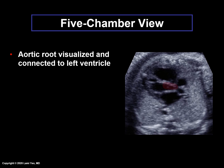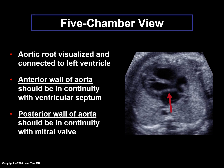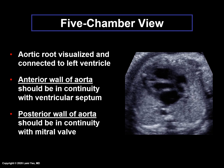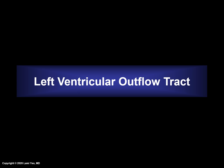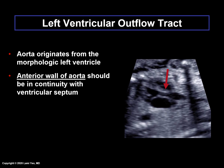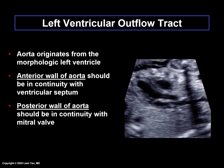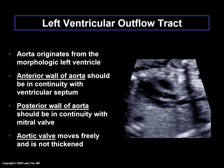Five-chamber view. In the five-chamber view, the aortic root is visualized and is connected to the left ventricle. The anterior wall of the aorta should be in continuity with the ventricular septum, while the posterior wall of the aorta should be in continuity with the mitral valve. Moreover, the aortic valve should move freely and is not thickened.